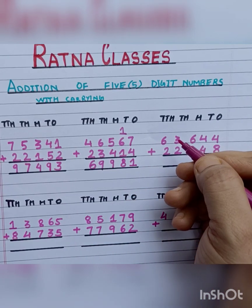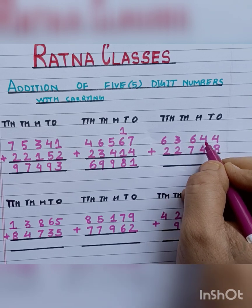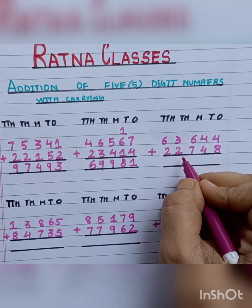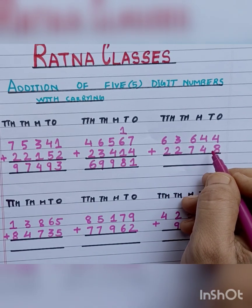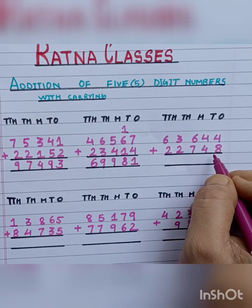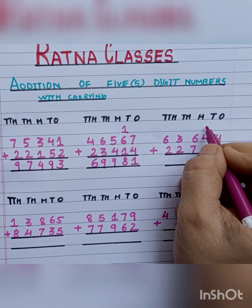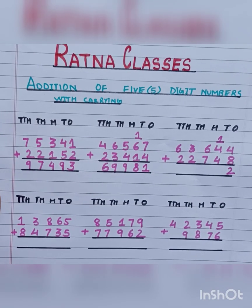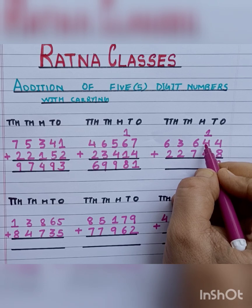Now our next sum is 63,644 plus 22,748. First of all, we will add 4 plus 8, which is 12. So we will write 2 here and carry 1. Now we will add 1 plus 4, which is 5.